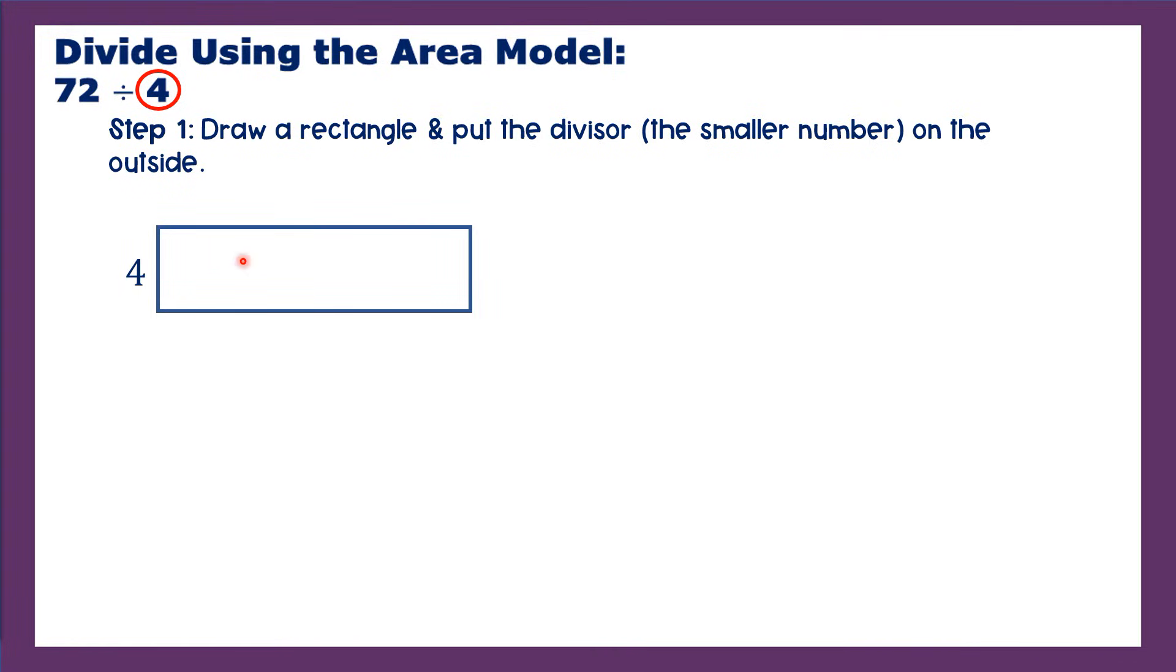Now this is called an area model. Area models will often use rectangles and they will use multiplication simply because if I were to find the area of a rectangle, I would remember that it's base times height. So that's where you get a rectangle and it's area model. Okay, so let's get on with this problem.